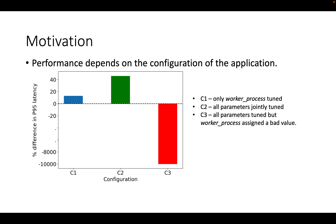As you can see in this graph, we have the performance numbers for three different configurations. On the y-axis, we have the percentage difference in P95 latency compared to the P95 latency of the default configuration. The blue bar corresponds to configuration C1, where we only tune the worker process parameter of the application and keep the rest at their default values, and just this produces up to 13% improvement in P95 latency compared to the default configuration.